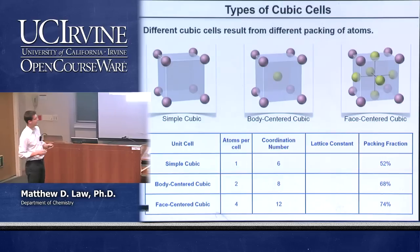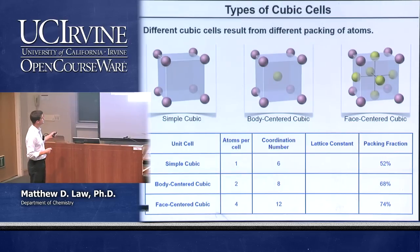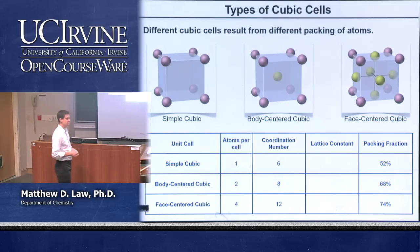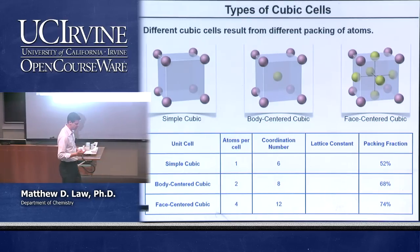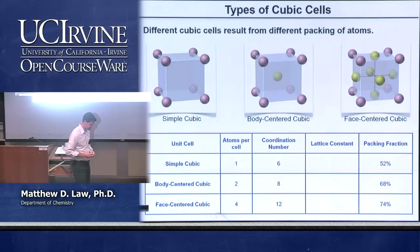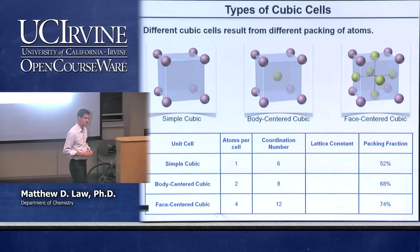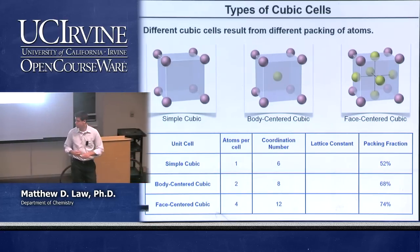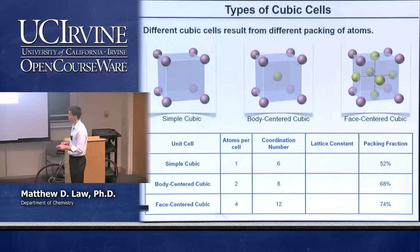Let's remember the three different kinds of cubic lattices: the simple cubic, the BCC, and the FCC. Previously we talked about the number of atoms per unit cell — it's either 1, 2, or 4, going from simple cubic to face-centered cubic.